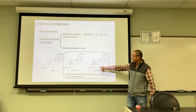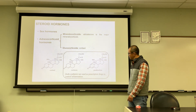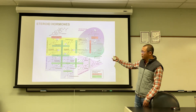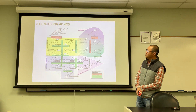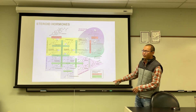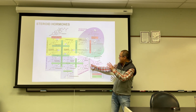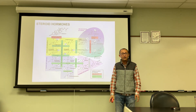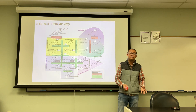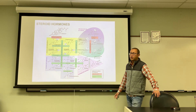Two synthetic glucocorticoids are shown: cortisone, made by oxidizing the secondary alcohol of cortisol into a ketone, and hydrocortisone, which introduces a double bond into the structure. Cortisone cream is used as an anti-itching, anti-inflammatory topical treatment. All steroid hormones are interconverted with each other biologically and are all synthesized from cholesterol, which is why these hormones are present in both males and females.